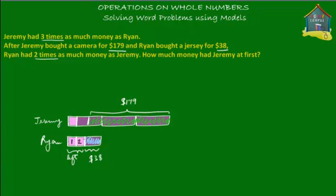So we need to extend Jeremy's bar because that means the $179 is further to the left. This $179 is what Jeremy spent on the camera, and this is one pink block of money that he is left with. Now what we have to find out is how much money Jeremy had at first. We know the green shaded part is $179; what we don't know is the value of the pink part.